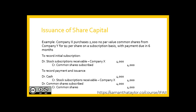Let's look at an example. Company X purchases 2,000 no-par-value common shares from Company Y for $2 per share on a subscription basis, with payment due in six months. To record this, we would debit accounts receivable for the full amount of $4,000 ($2,000 × $2) and credit common shares subscribed in shareholders' equity. Then when we record the subsequent payment, we would debit cash, remove the subscriptions receivable, and issue the shares.